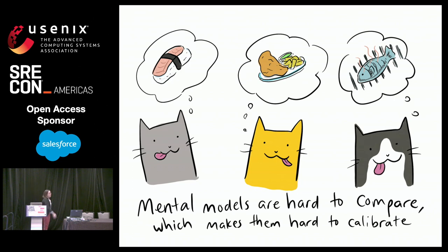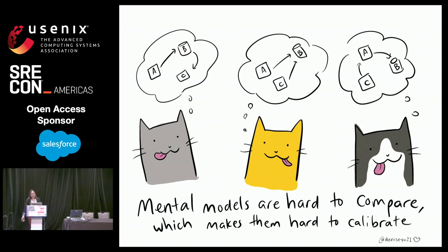For example, you tell three different engineers 'we're going to have fish,' and they might have very different concepts of what that actually means. Or maybe they have very different ideas of the mental model of the architecture of your system, or how things actually work under the hood. The systems we build and run today are really, really complex — bigger than we can hold in the conscious part of our brains — which makes having conversations about them incredibly difficult.